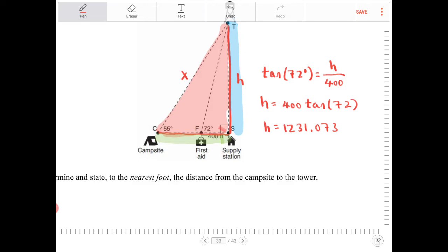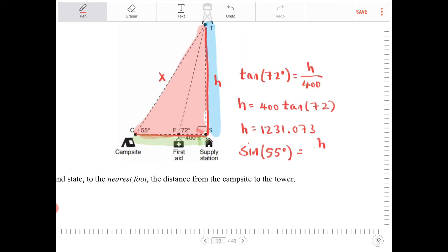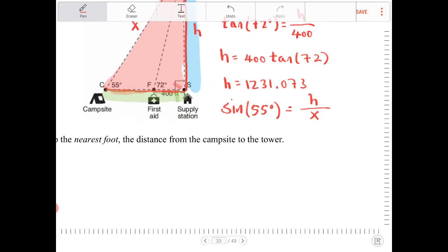So H happens to be opposite of 55 degrees. X happens to be the hypotenuse of the big right triangle. So which trig ratio will involve opposite to hypotenuse? That would be a sine ratio. I can then say sine of 55 degrees is equal to H over X. And what was the value of H again? H was 1231.073. So sine of 55 is equal to 1231.073.